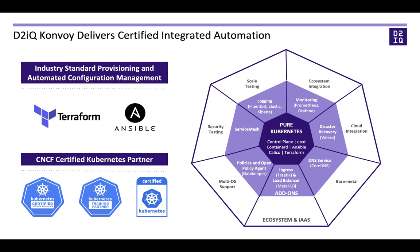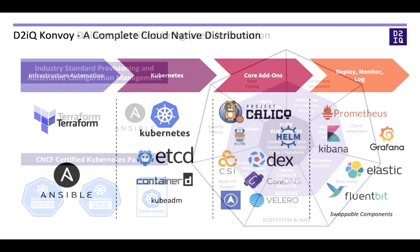Beyond the core, Convoy connects to various other components including policies, service mesh, and logging capability. Monitoring uses Prometheus with a Grafana dashboard. These layer on top of the core engine, which supports various cloud integrations whether you run Kubernetes on-premise, on bare metal, or in the cloud. Multiple OS support is available, making Convoy robust for running applications either on-premise, in the cloud, or in hybrid mode.